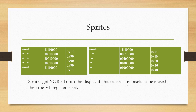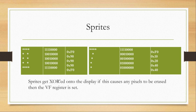Sprites are also XORed onto the screen. If you don't know what XOR is, you really need to research it because this course involves a lot of bitwise logic. The sprites get XORed onto the display, and if this causes any pixels to be erased, then the VF register is set to 1. If nothing is erased, the VF register is set to 0.